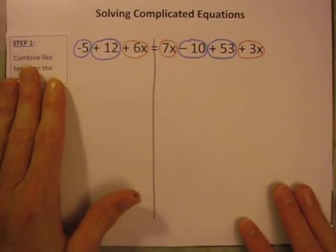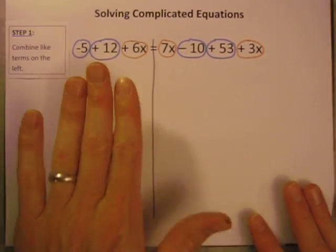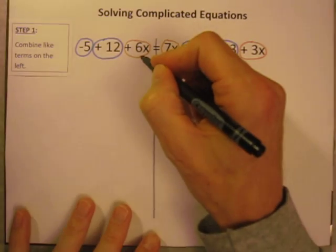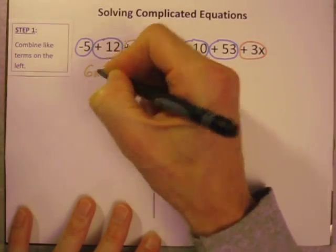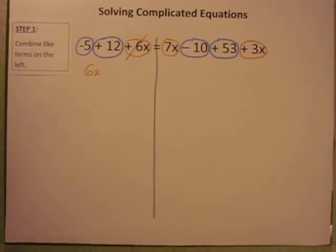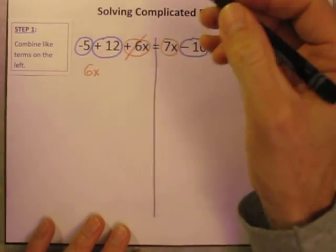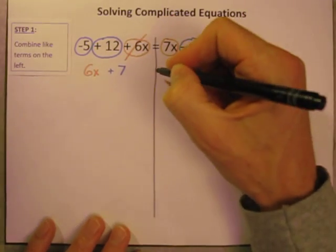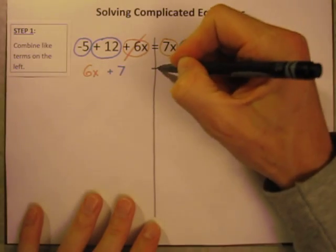Step one, let's combine the like terms on the left. So let's just do the left side first. And now let's do our x's. If we look at all these things, how many x's have we got? We've only got a 6x. There's no other x terms on the left, so I'm just going to rewrite 6x, and I know I'm done with that term. Let's do the numbers. On the left there are two numbers, a negative 5 and a positive 12. And if I do negative 5 plus 12, I'm going to get a positive 7 or plus 7.